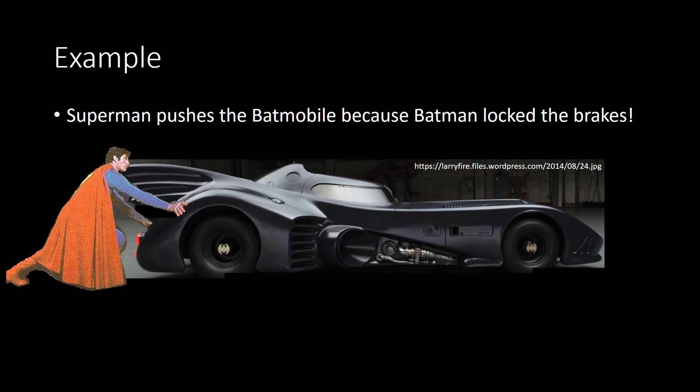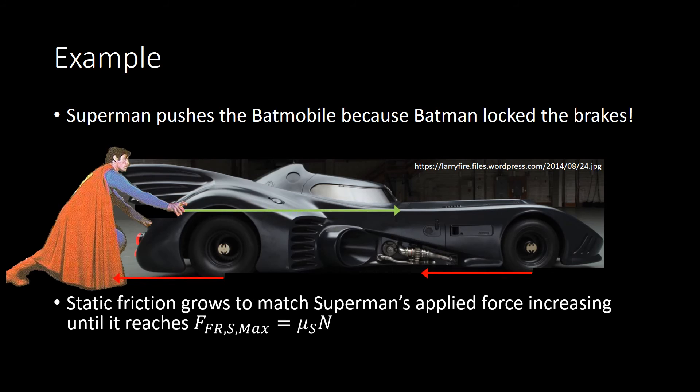As Superman begins to push, the force he applies will gradually increase, and as a result, friction will continue to oppose that motion. So the force of friction is going to rise up until it reaches some maximum value. So here's that shown schematically. And that maximum value is, of course, the coefficient of static friction times the normal force.